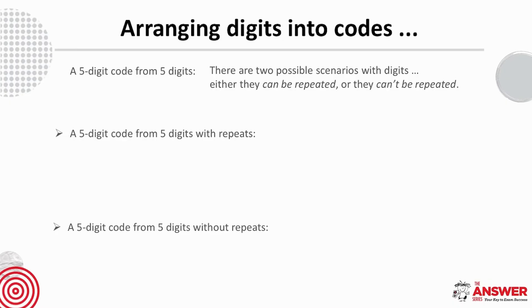Let's start by looking at where the number of digits available and the length of the code is the same — in this case, a five-digit code from five digits. With digits there are two possible scenarios to bear in mind: either the digits can be repeated or they can't be repeated.